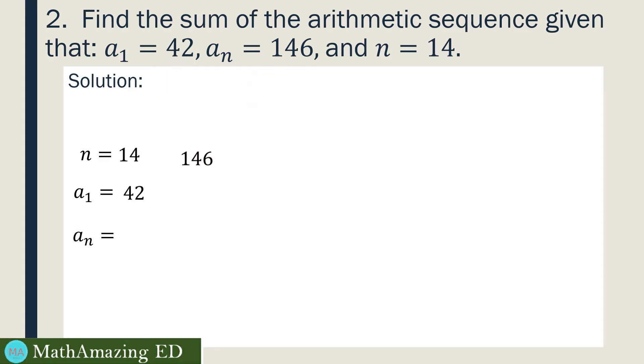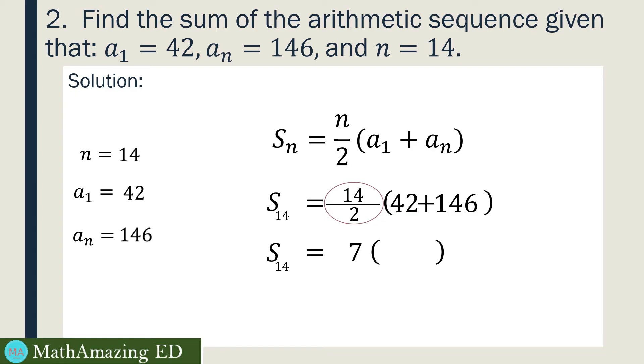So S sub the value of n, which is 14, equals 14 divided by 2 times the quantity, our first term is 42 plus our nth term, or a sub n, is 146. And then perform the indicated operation. We have to divide 14 by 2, and that is just 7. Inside our parenthesis, we have 42 plus 146, that is just 188. And then multiply. The answer is 1,316.